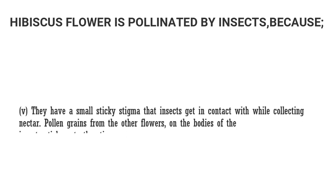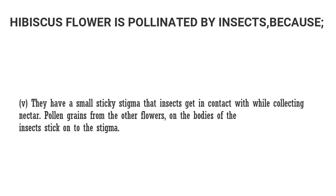Five, they have a small sticky stigma that insects get in contact with while collecting nectar. Pollen grains from the other flowers on the bodies of the insects stick onto the stigma.